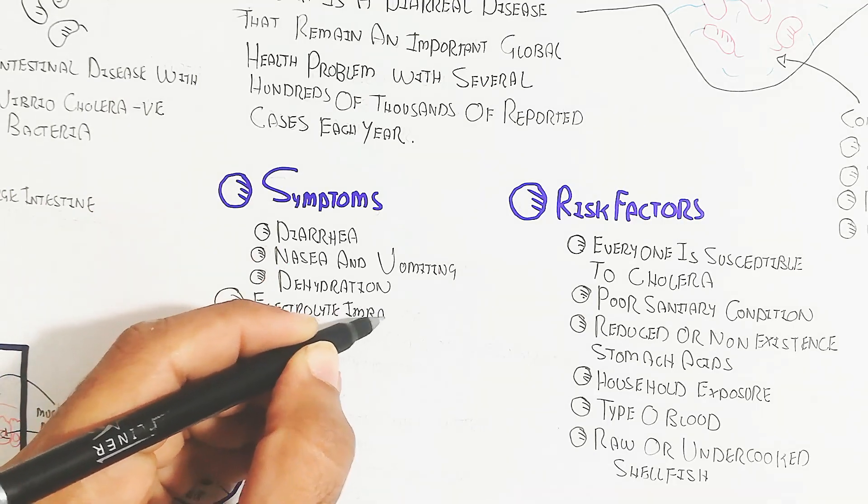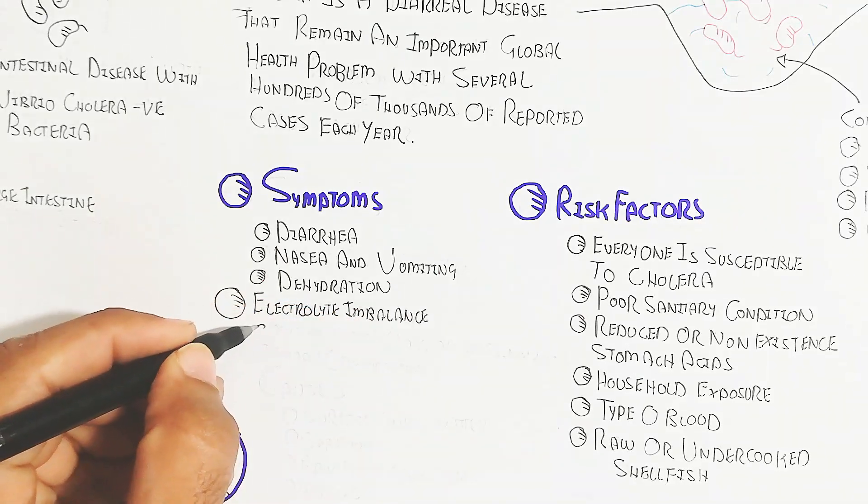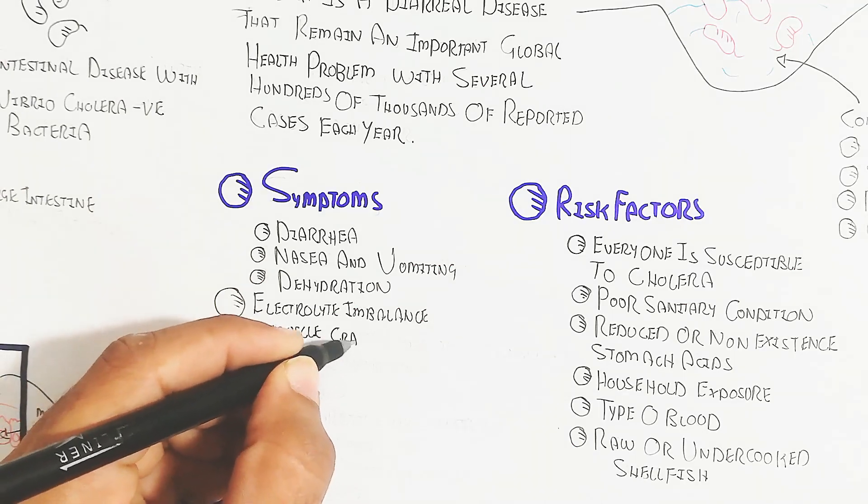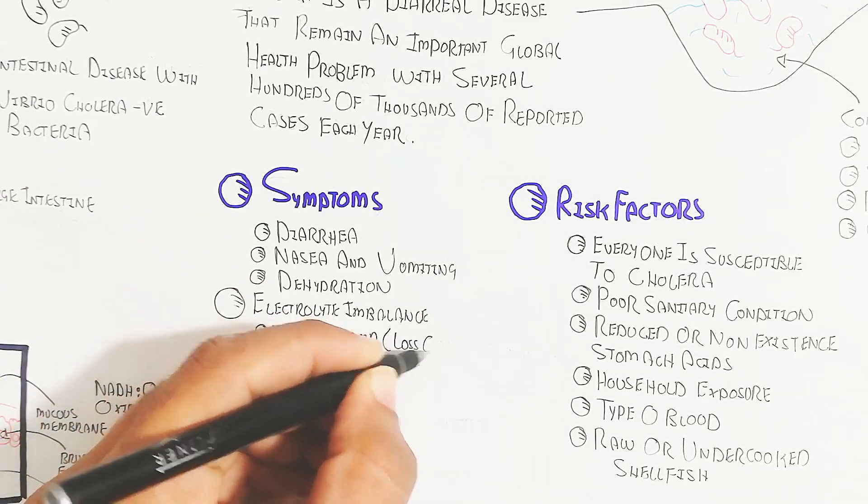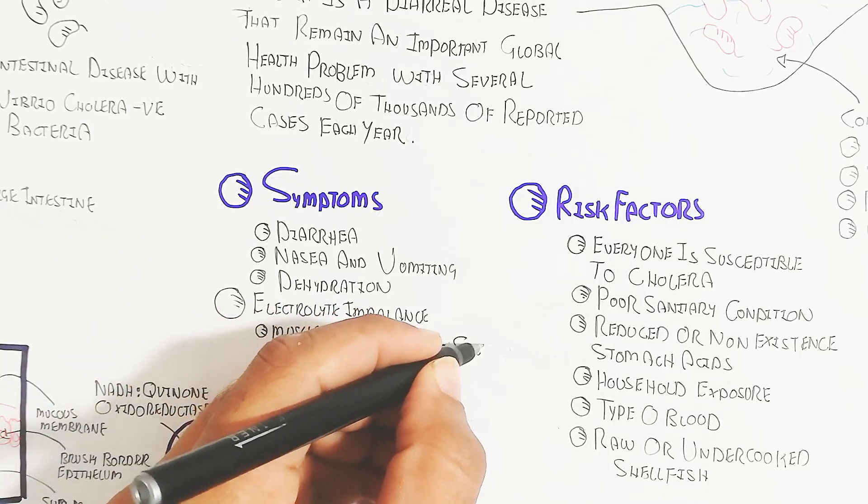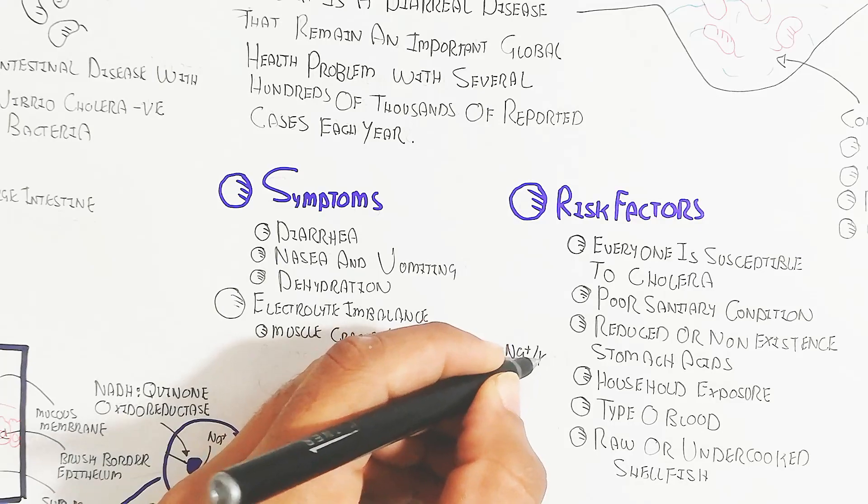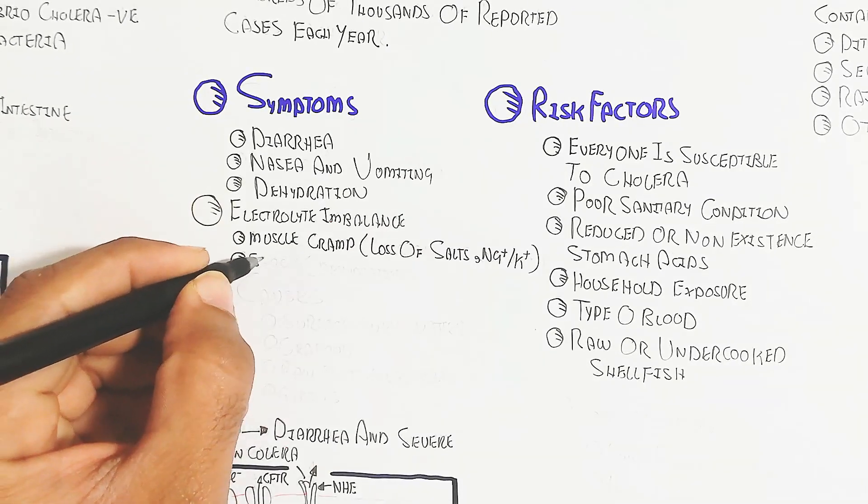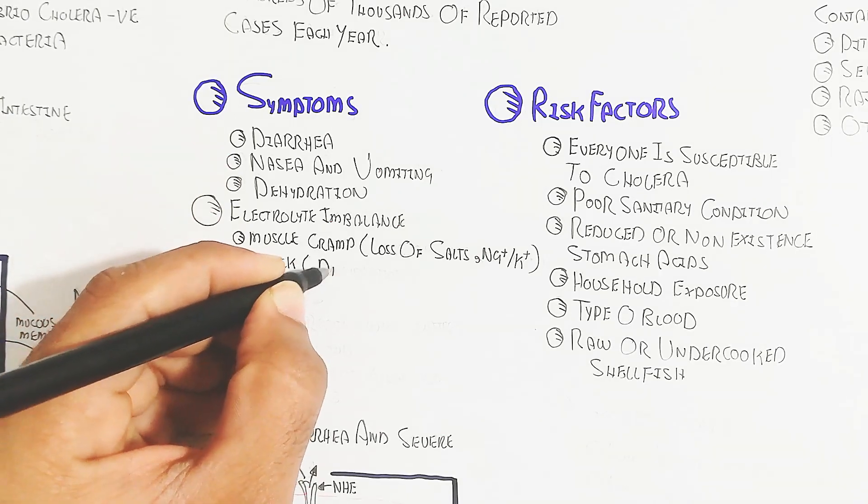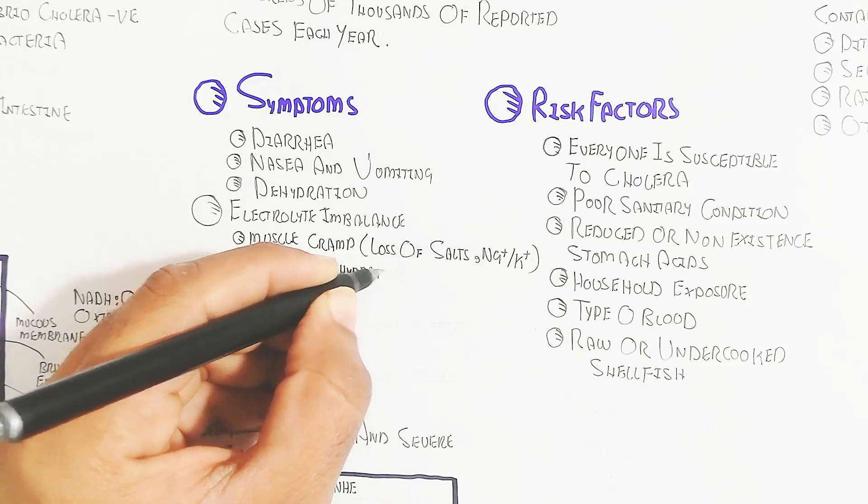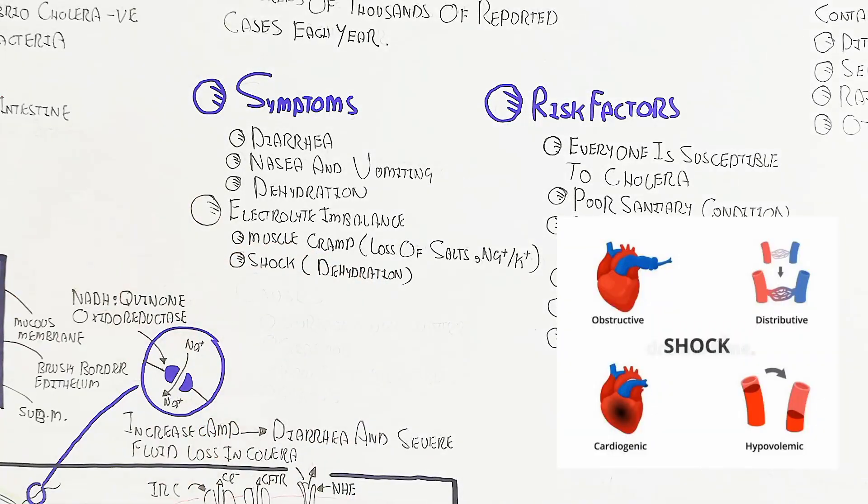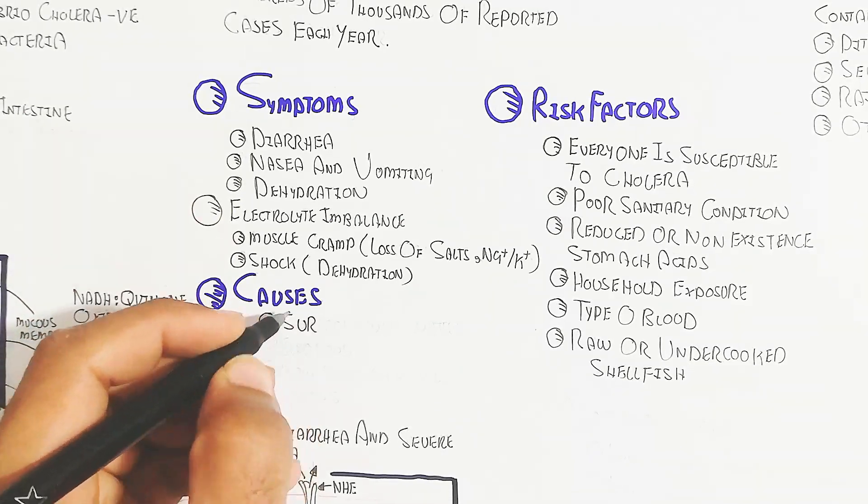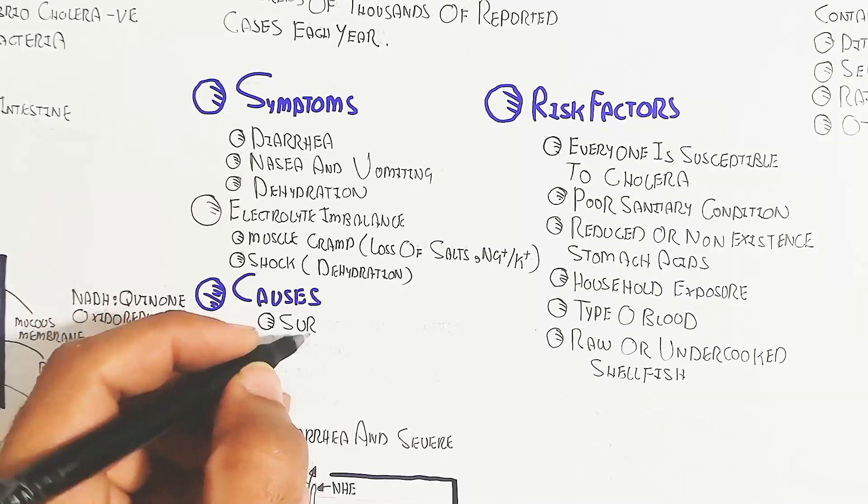Electrolyte imbalances - when electrolyte imbalance occurs, muscle cramps can happen because of loss of salt, sodium, and potassium. Shock can occur due to dehydration. When dehydration occurs in the blood circulatory system due to lack of absorption, it will lead to obstructive shock or hypovolemic shock.